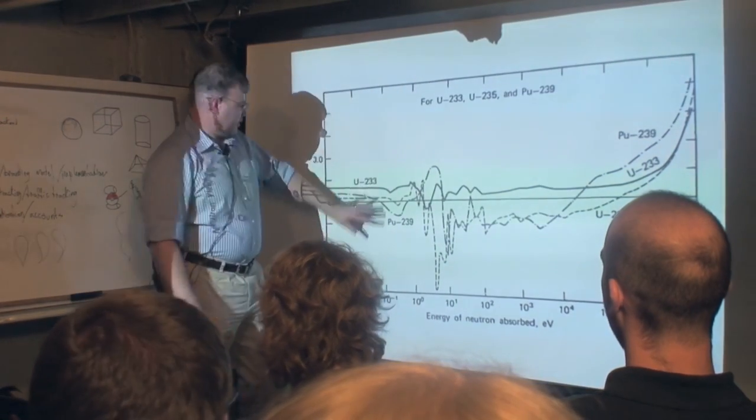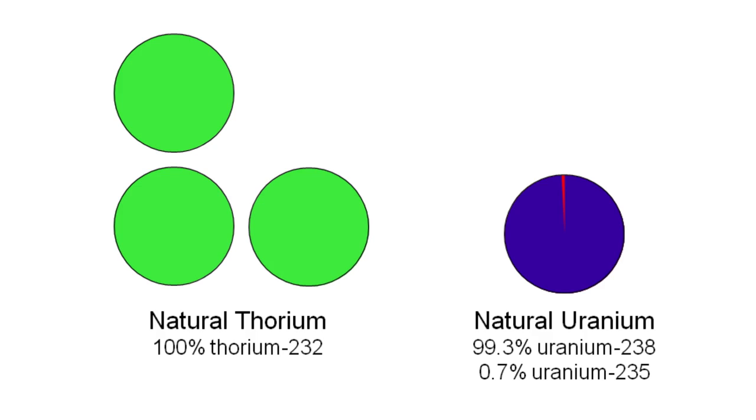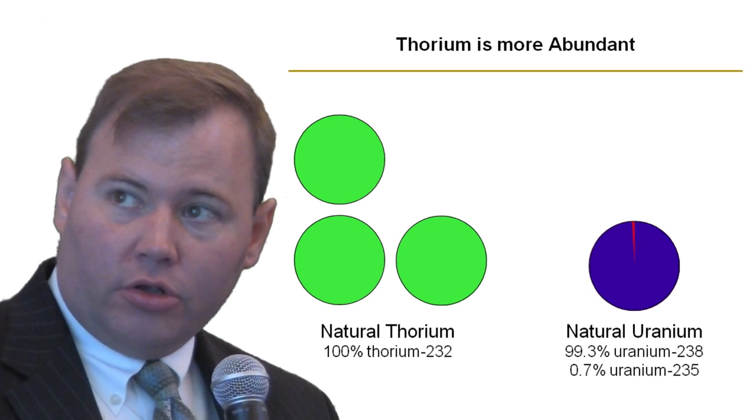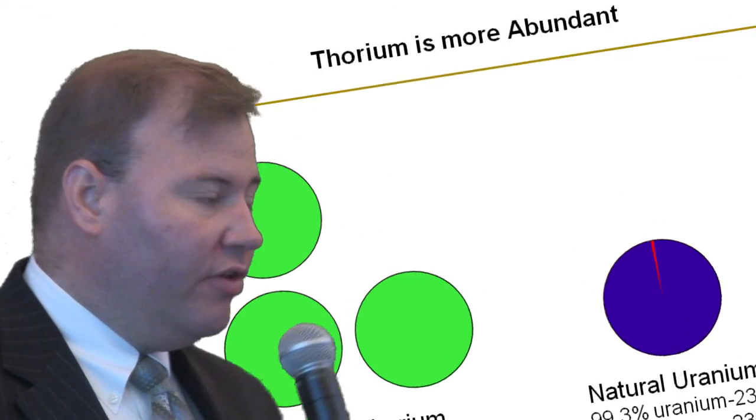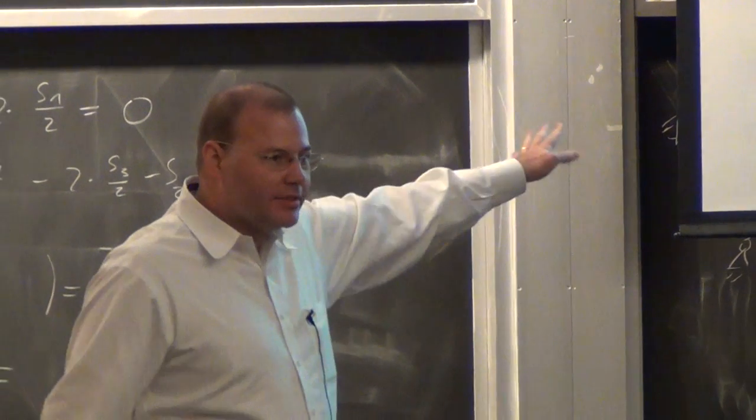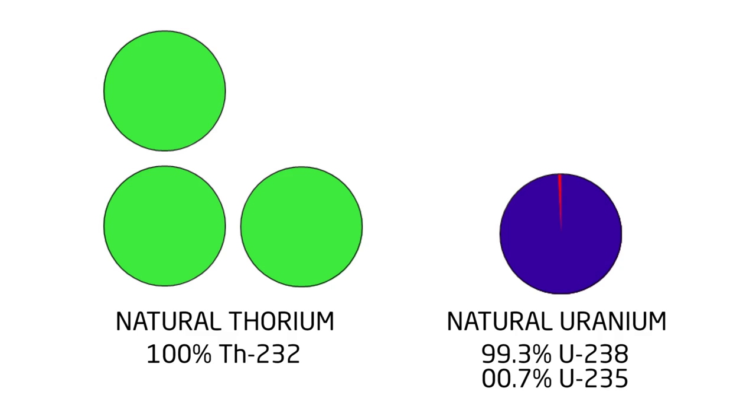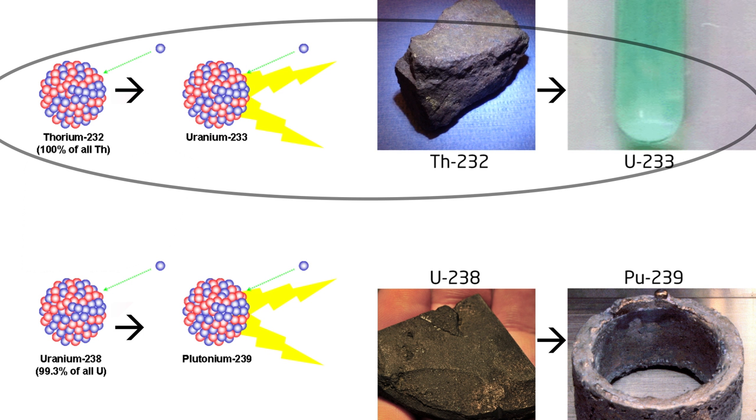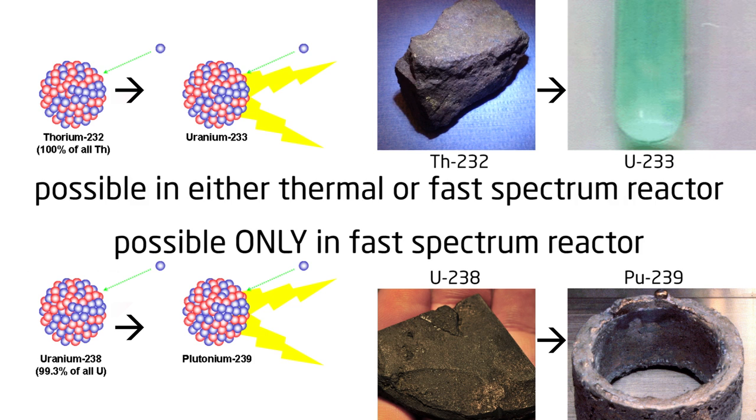This is the fast region. This is the thermal region. Thorium is more abundant than uranium. All we're consuming now is that very small sliver of natural uranium. But this is not the big deal. It's not a big deal that natural thorium is hundreds of times more abundant than the very small sliver of fissile uranium. The big deal about thorium is that we can consume it in a thermal spectrum. That's the big deal of thorium, is that it can be consumed in a thermal spectrum reactor.